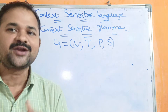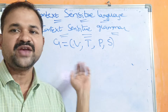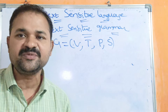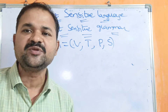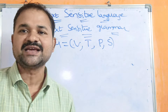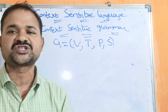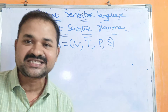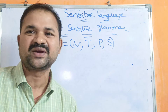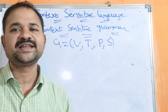Just like regular grammar and context free grammar, here also we have four tuples where V is a set of variables, which can also be called as non-terminals. Variables or non-terminals are represented by uppercase letters. T means set of terminal symbols. Terminals are represented by lowercase alphabets, or we can use digits from 0 to 9, or combinations of digits like 10, 20, 30, or terminal symbols like plus, minus, star.